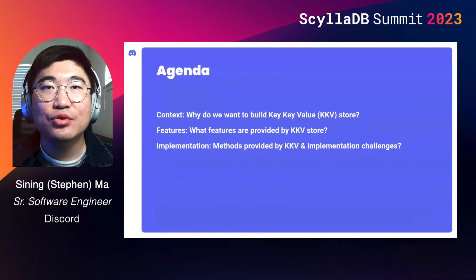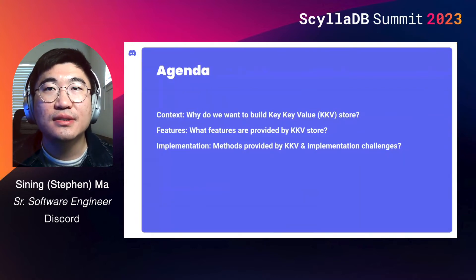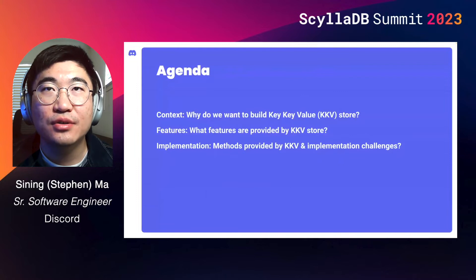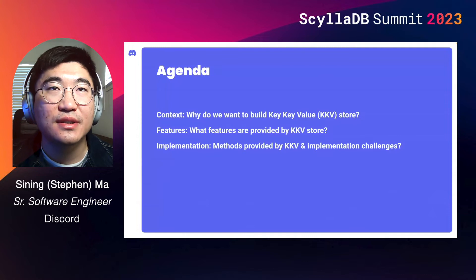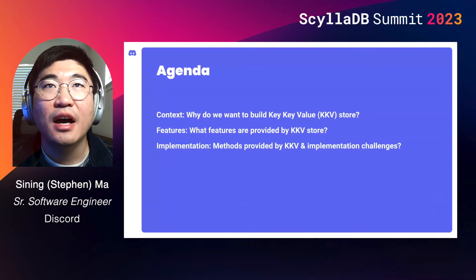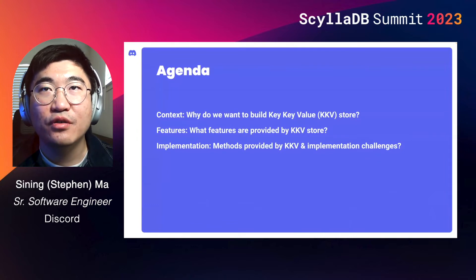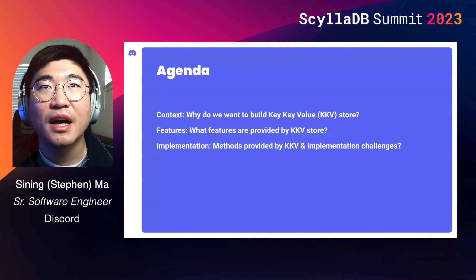I'm planning to dive into this service following this agenda. We will first start with why this service is necessary and what features are provided for making a developer-friendly key-value service. After that, I will go through several implementation details and explain how this service safeguards developers against CELA DB performance complexities through a tombstone reduction mechanism and automatic splitting of large partitions.